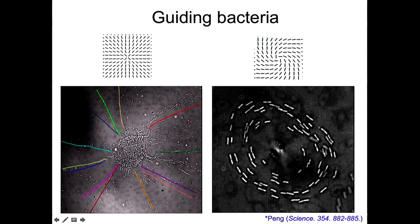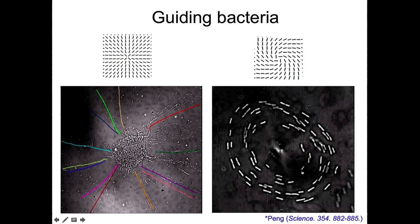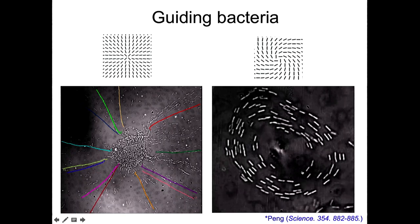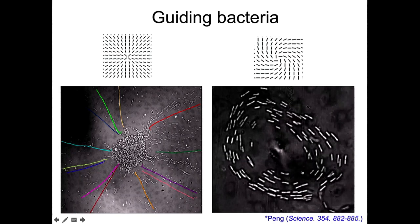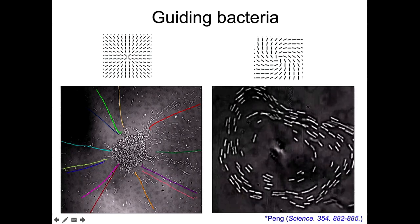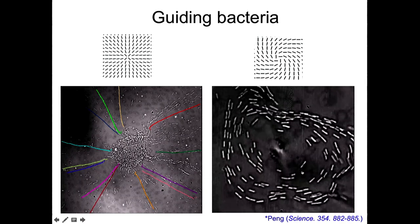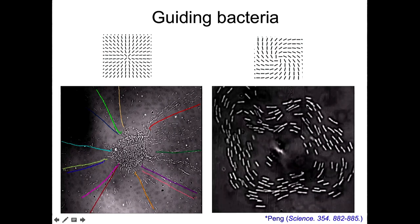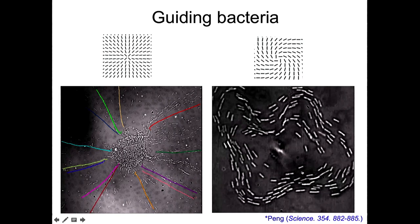But if we create like a vortex configuration like here, it's even more interesting. Bacteria will think that they are fish now and they will school. And take a note that there is certain type of instability. You can see the formation of wave like this. And the mechanism why you see this instability, you can see like three wavelengths, four periods here.